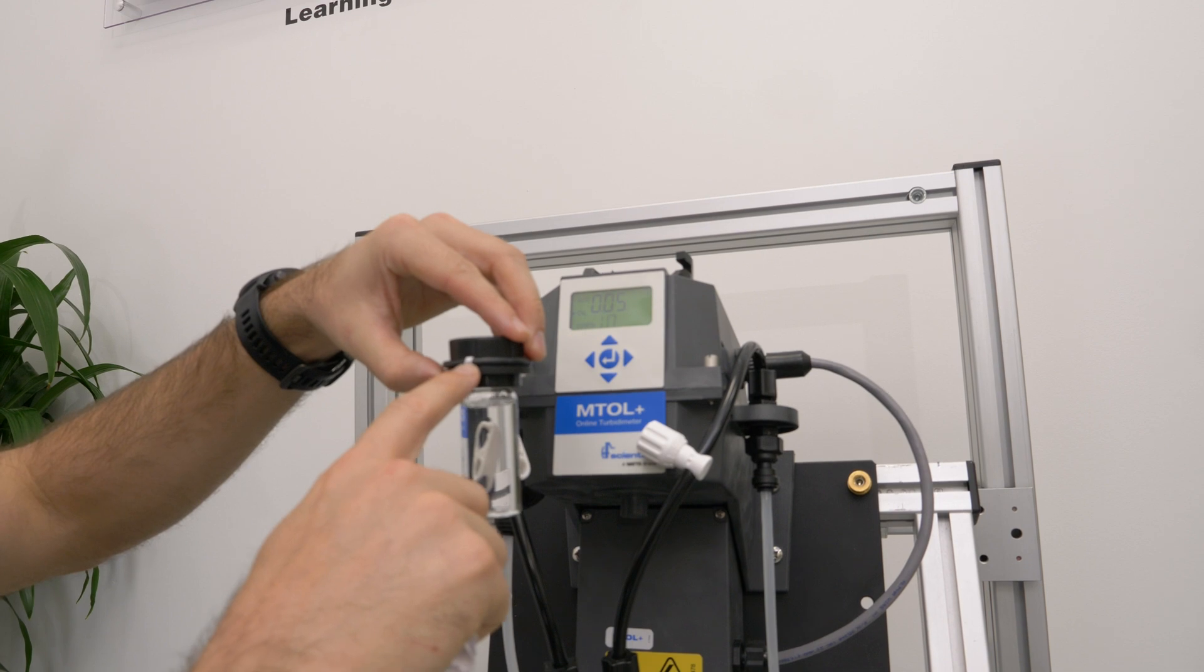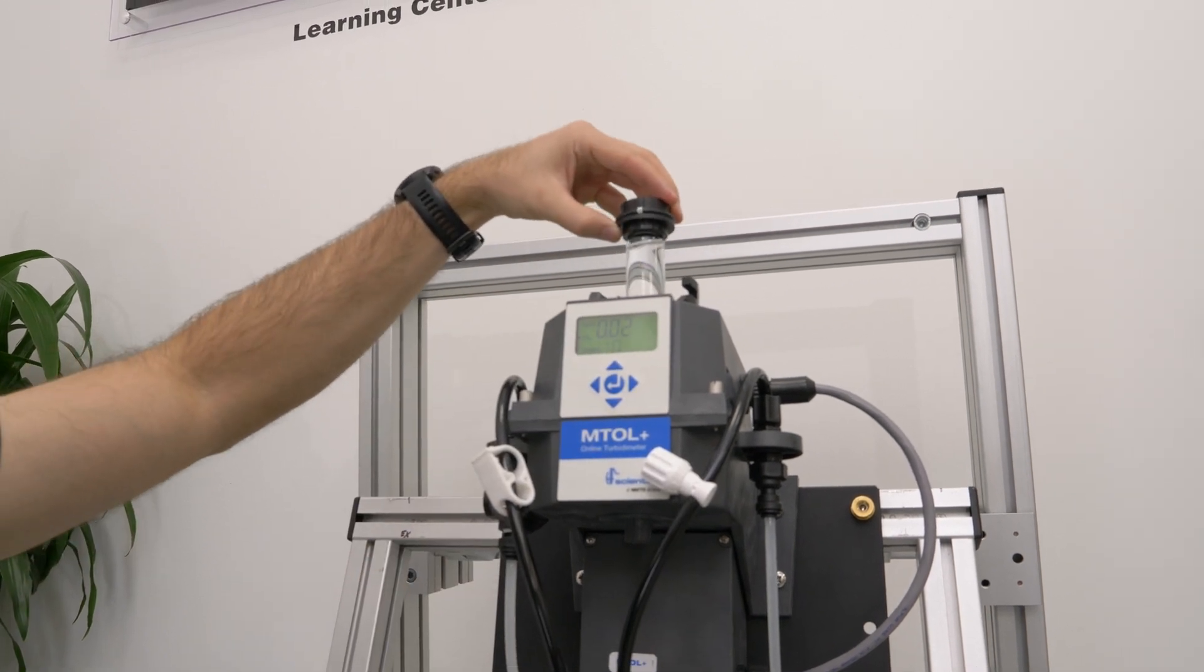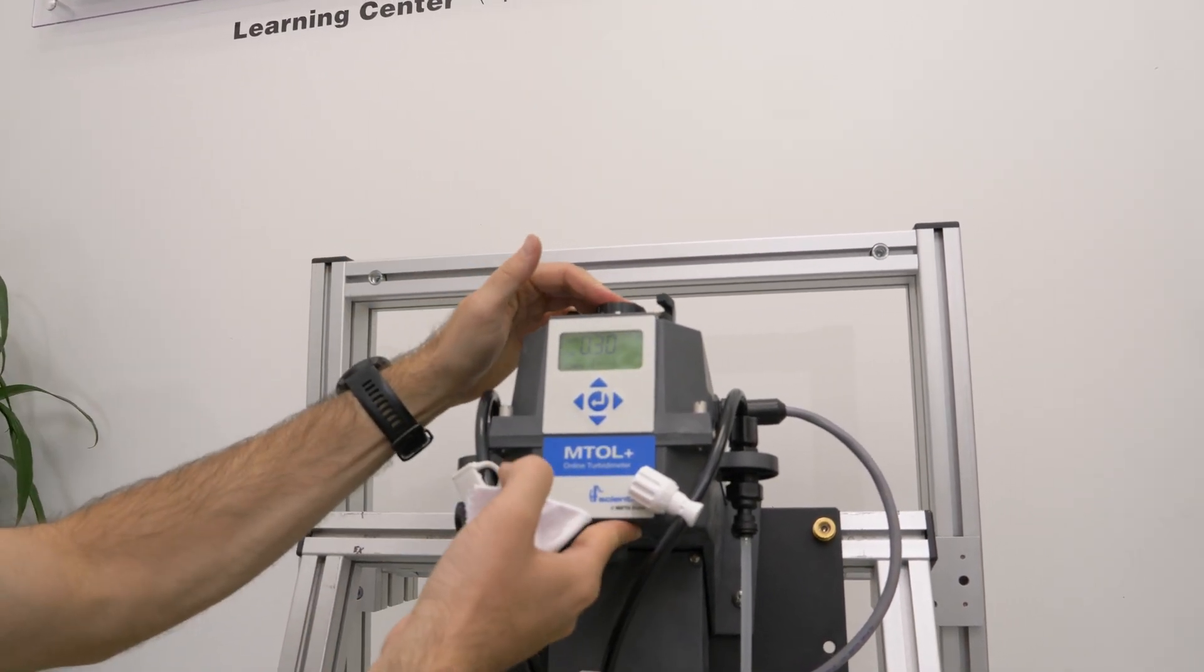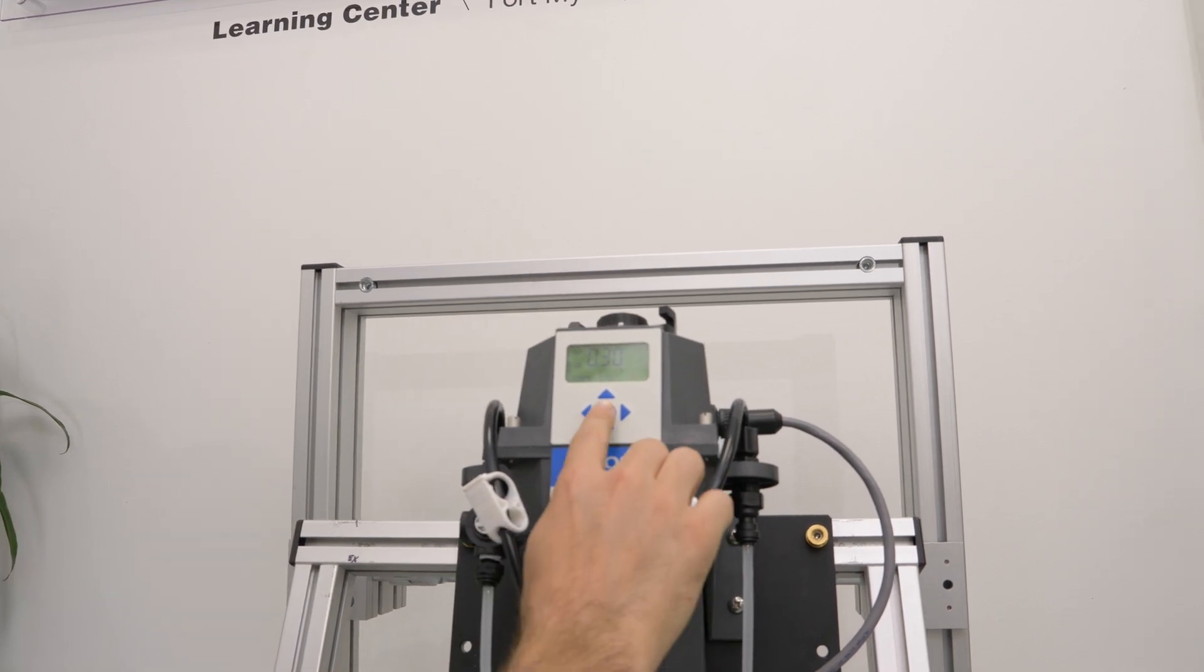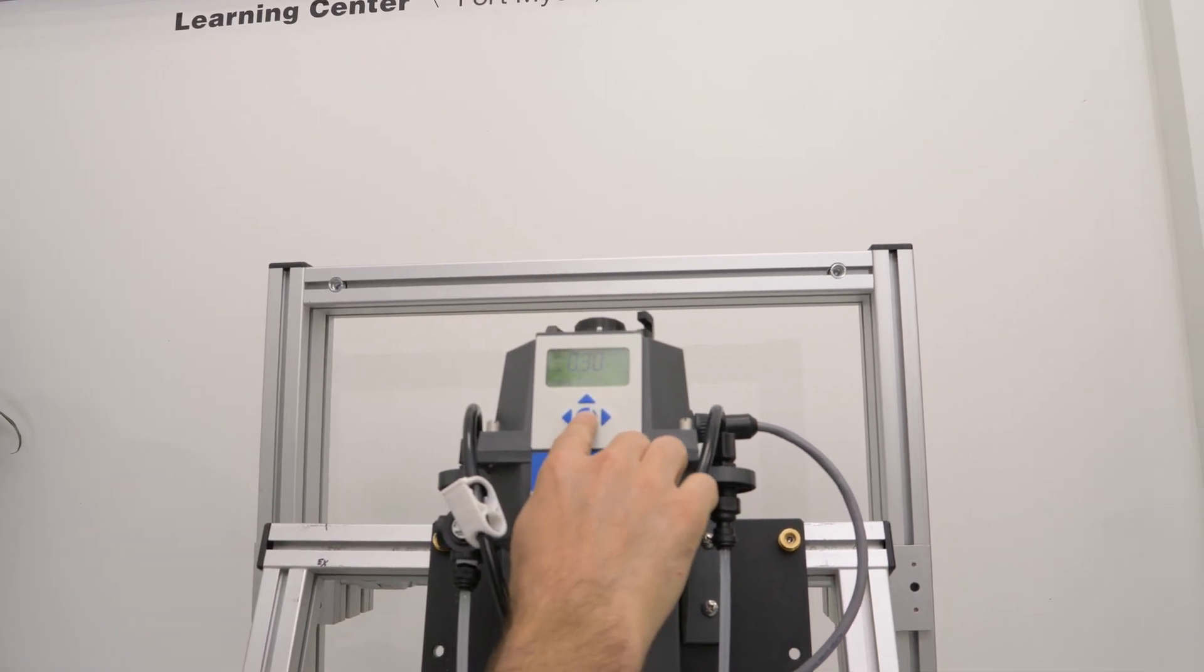Insert the first cell into the MTOL+. If this is the first time you have used this calibration kit, you need to index the cells to the point of the lowest optical interference.